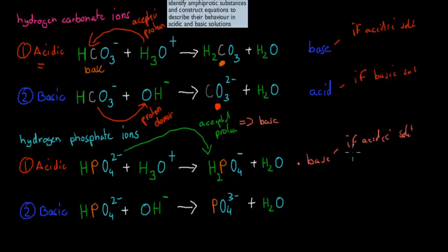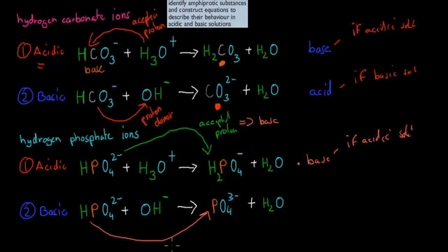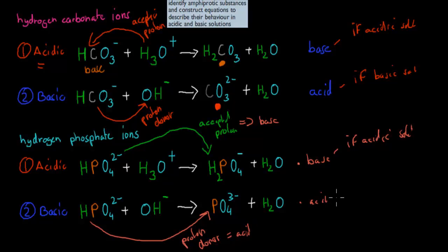In the second example, the same hydrogen phosphate ion is now in a basic solution with hydroxide present. It gives its hydrogen to the hydroxide ion, becoming a phosphate ion. It is acting as a proton donor, which makes it an acid. So hydrogen phosphate acts as an acid when it's in a basic solution.